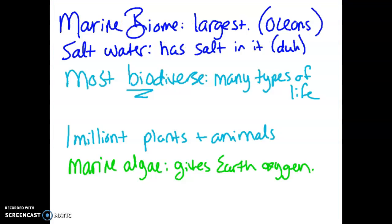To quickly summarize: the marine biome is our largest biome. It has salt water — water that has salt in it, which is a very easy definition. It's the most biodiverse, meaning it has the most different types of life. It has a million-plus plants and animals, and scientists think there are about nine million more we haven't discovered yet. Marine algae lives throughout the ocean, and when plants go through photosynthesis, they give us oxygen, which is important.